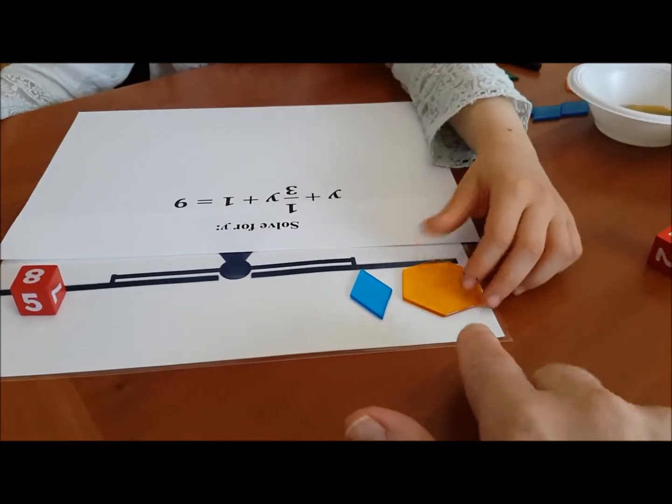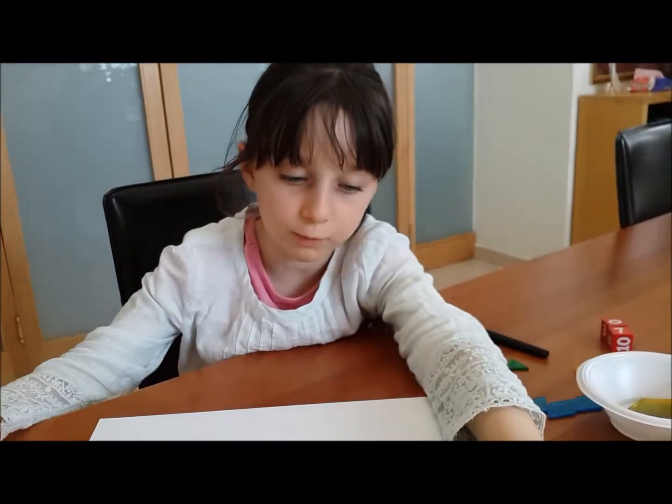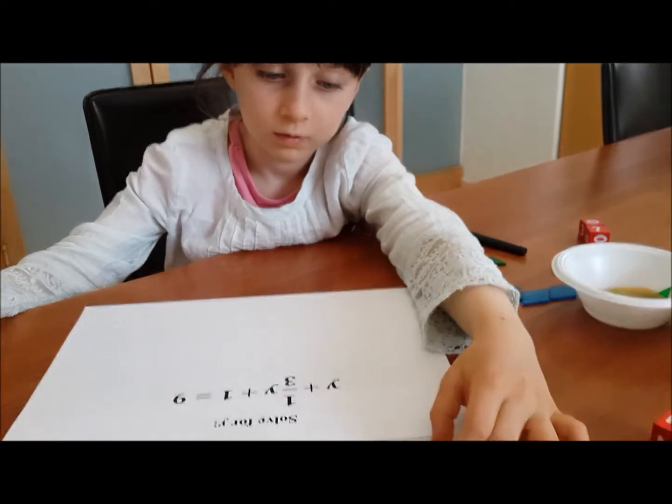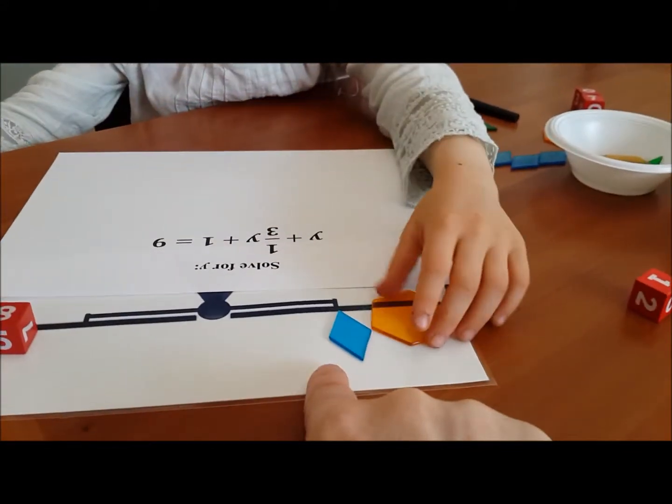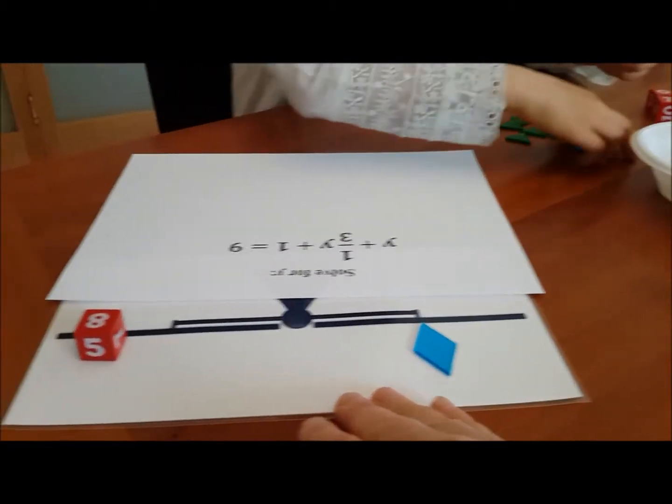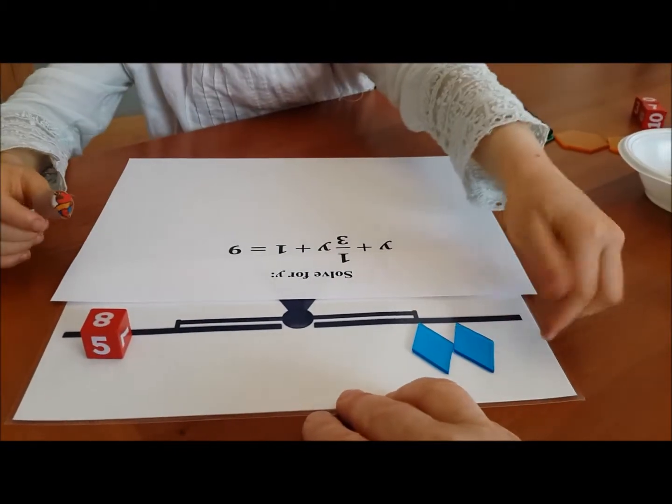Wait, before you do it, tell me what you're going to do. I'm going to take out this and exchange it for three. For three what? For three thirds. For three thirds. Okay, why don't you do that? Take out the yellow block. Exchange it for three thirds.